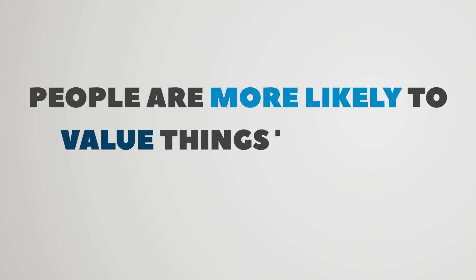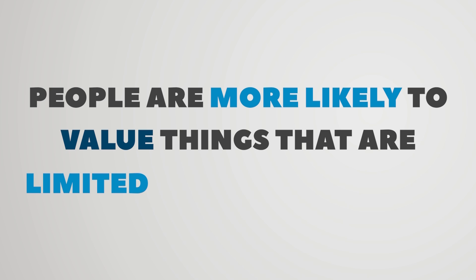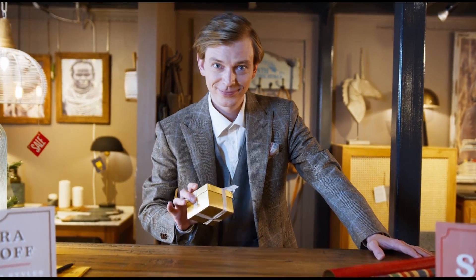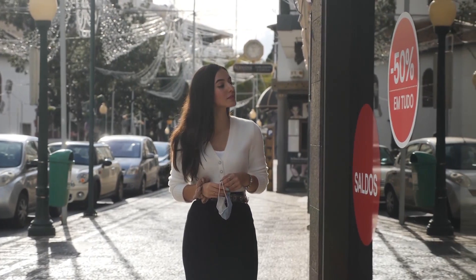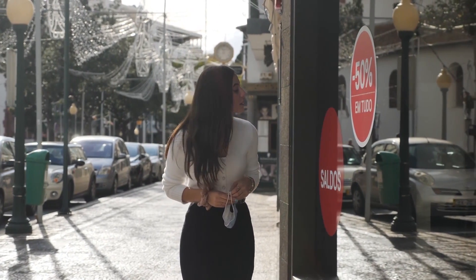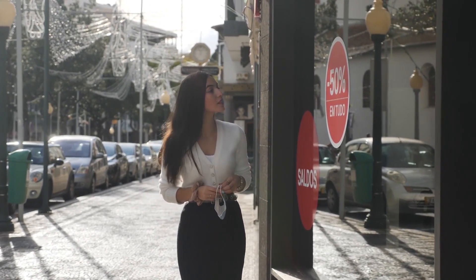The second principle is scarcity. This principle states that people are more likely to value and take action for things that are limited in nature or hard to obtain. For example, if you're trying to sell a product, you can highlight that there are only a limited number of units available, or that the product is only available for a limited time. This triggers the fear of missing out, which can motivate people to act quickly. Remember this the next time you see a store promote a limited-time sale or a limited-edition product.